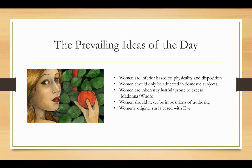These were the prevailing ideas of the day that Mary Wollstonecraft was fighting against. First, that women were inferior based on their physicality or disposition. Quite a lot was made of the fact that women were smaller and physically weaker than men, and many people saw that as an indication not only of what was on the outside, but that it reflected what was on the inside — so if women were physically weaker, it followed that they must be mentally weaker as well.